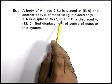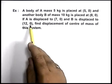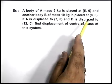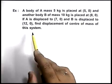If A is displaced to 7 comma zero from 5 comma zero, and B is displaced to 12 comma zero from 8 comma zero, we're required to find the displacement of centre of mass of this system.